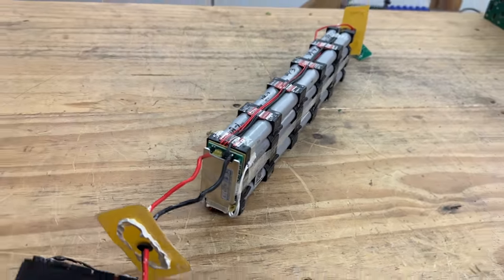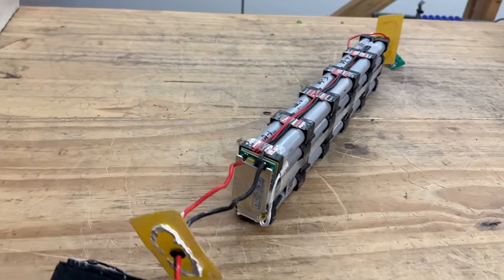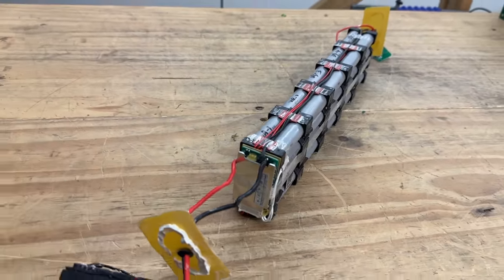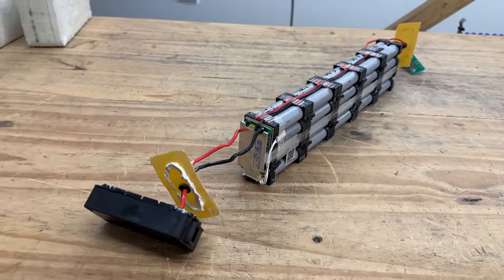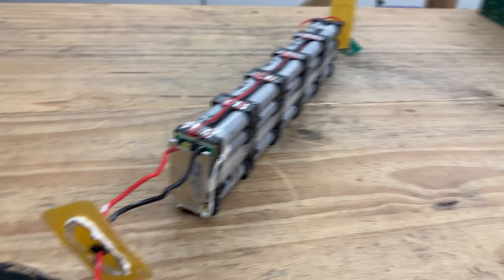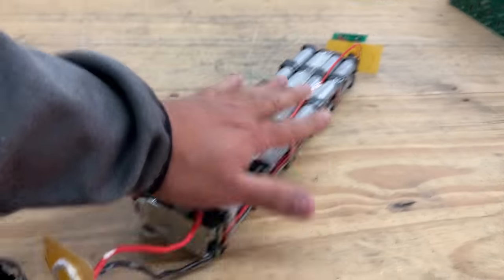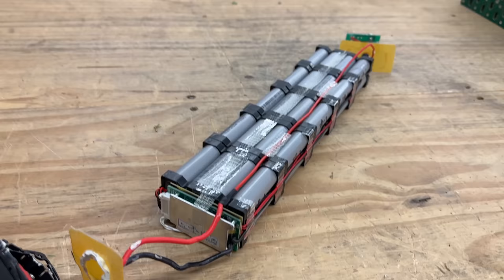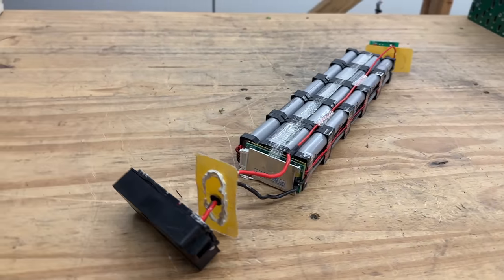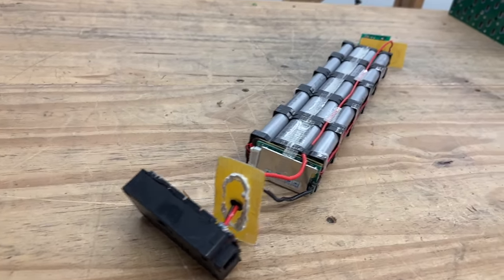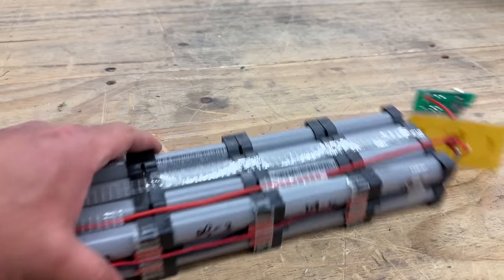So you can build about a 1400 watt system. I guess you could put two of these in parallel and then get the 1400 watts at 36 volts also. That's another way that you can do it.